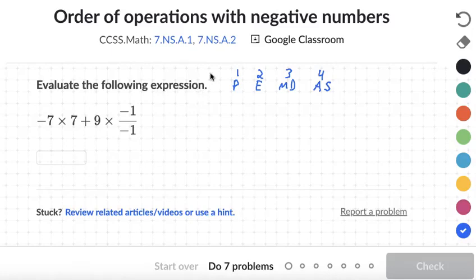In this video we are going to review how to work with negative numbers by working through the Khan Academy practice called the order of operations with negative numbers.